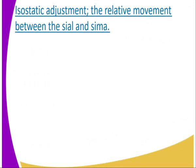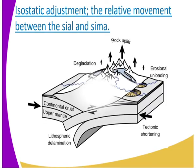Number four is isostatic adjustment. The relative movement between the sial and sima layers, as it tries to create isostatic equilibrium — as it is trying to create that balance, it must move. As a result, there is shaking or trembling, as we can see from the diagram.